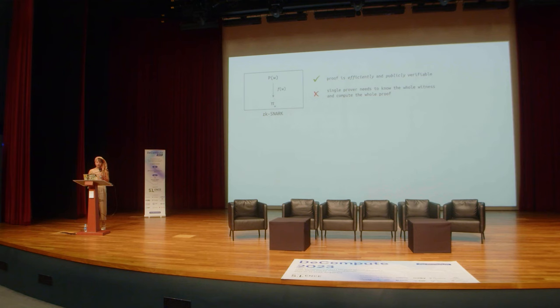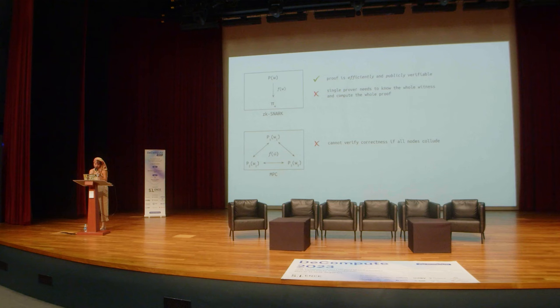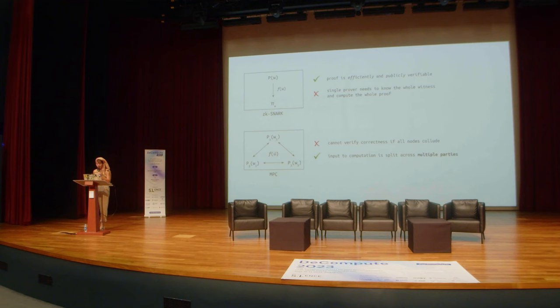An MPC already has naturally complementary features. In an MPC, the input to the computation is split across multiple parties. But there isn't a built-in way to verify that all nodes were honest. So if all nodes in an MPC collude, there isn't a built-in way to publicly audit this.